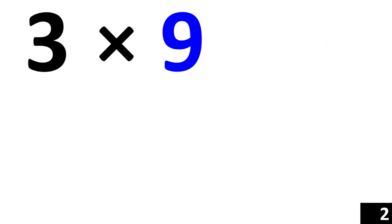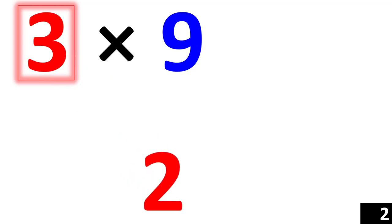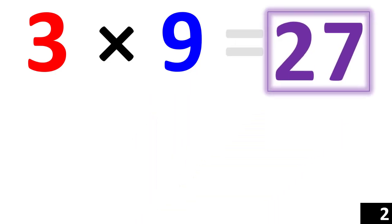3 times 9. First, we look at the number 3 and we say, what's 1 less than the number 3? That's 2. So, 2 is your first number. Then we say, 2 plus what number gives us 9? 2 plus 7 gives us 9. So, 7 is your second number and 27 is your answer.